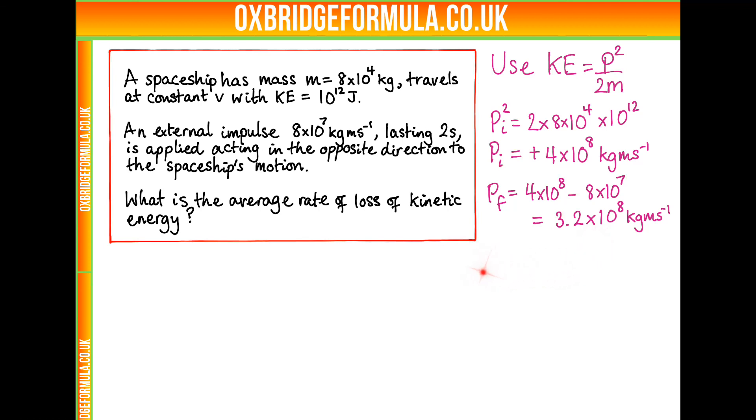So, how do we get the average rate of loss of kinetic energy? We have the average rate is change in kinetic energy over change in time, and we know the time, which is 2 seconds. So if we put our values in, we'll have p_i squared minus p_f squared, divided by 2 times the mass, and then the 2 for the time.